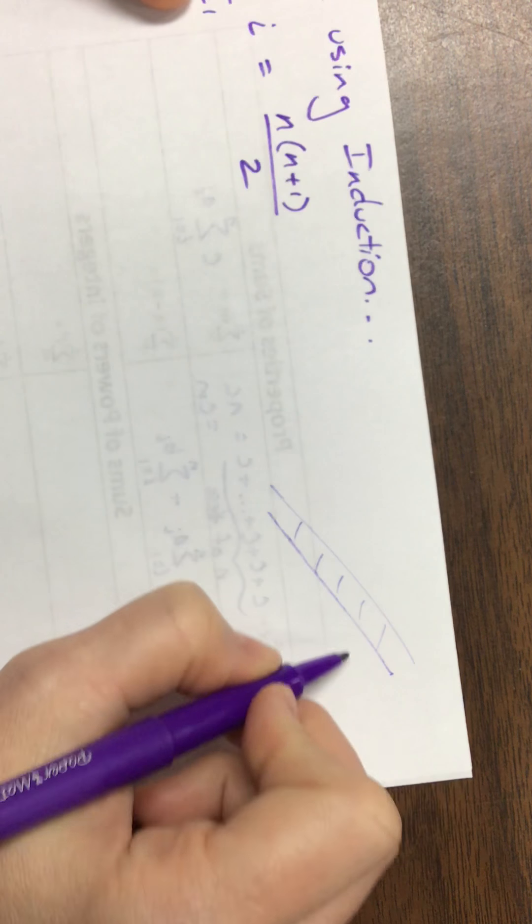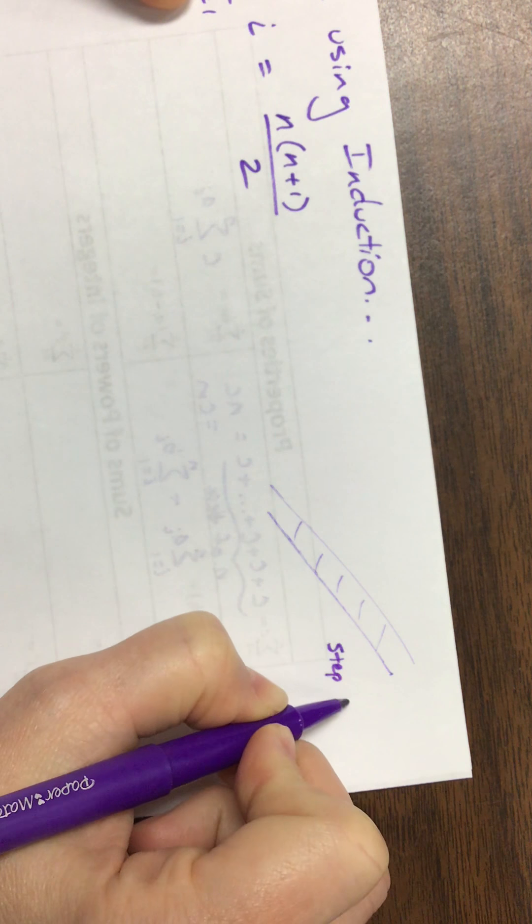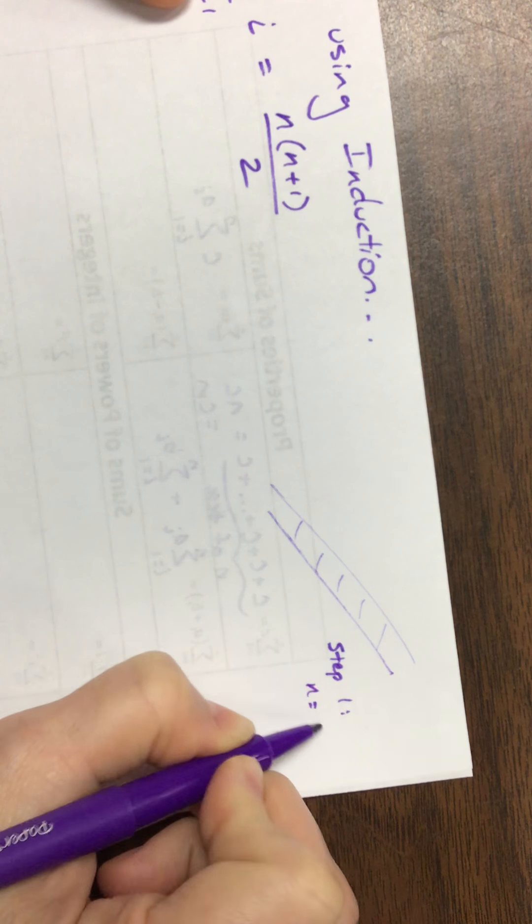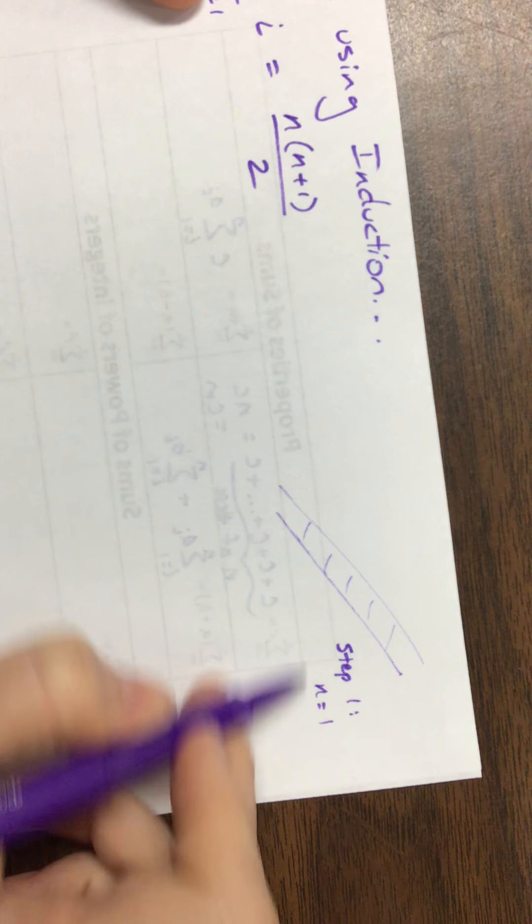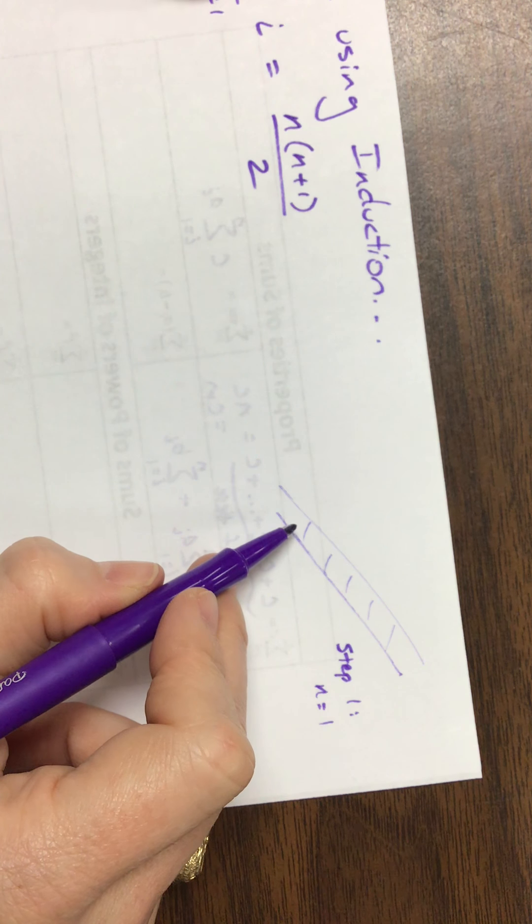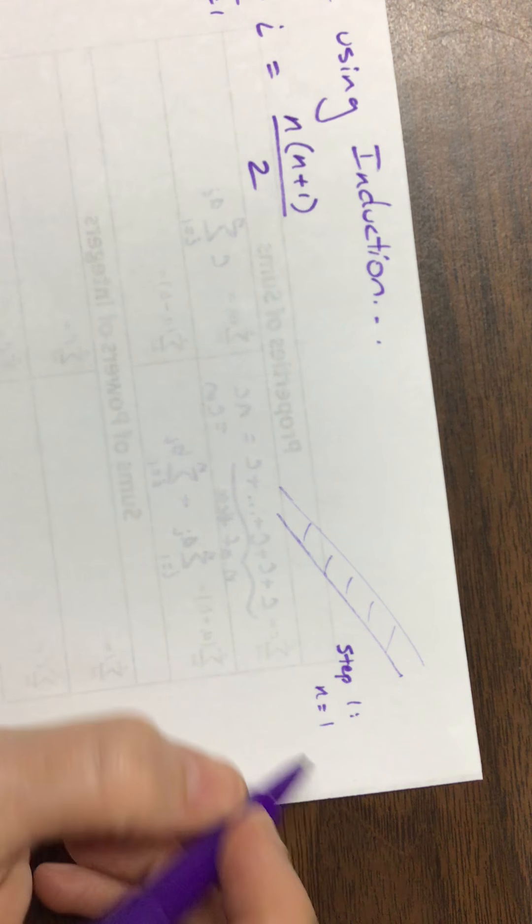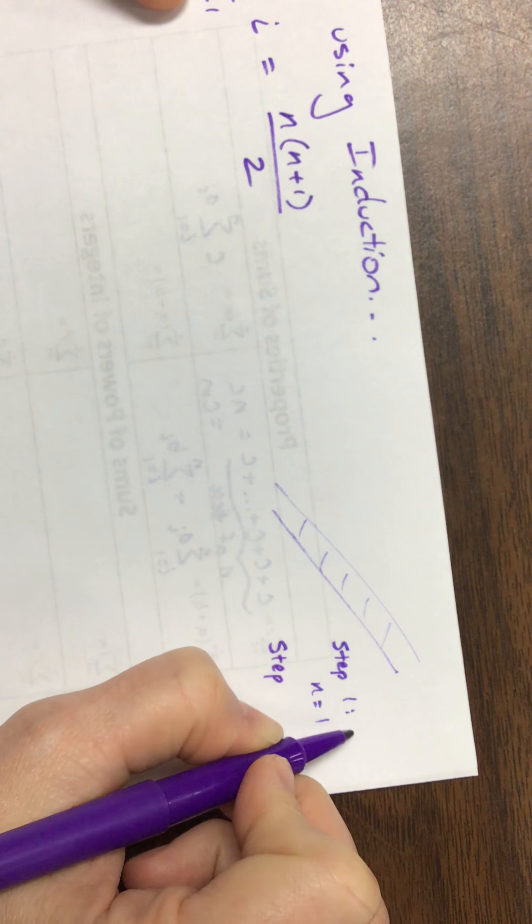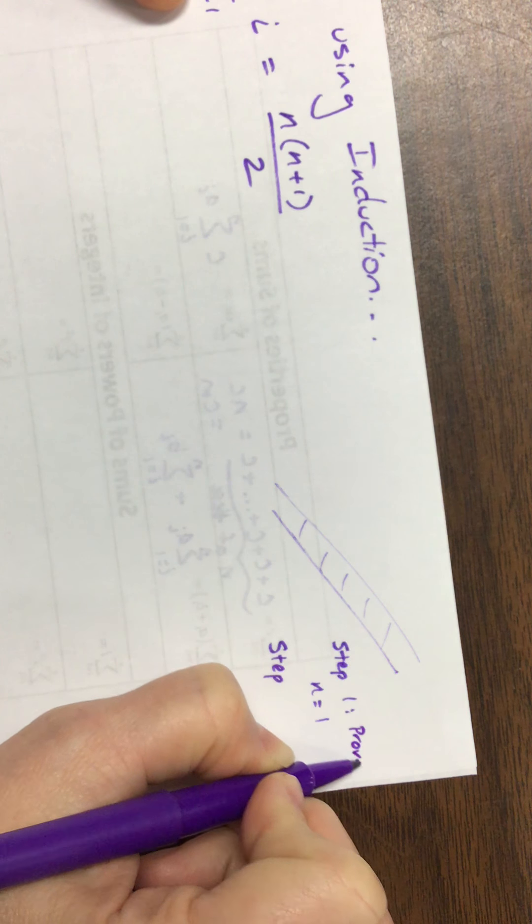And then, so step one, step one when we do this proof by induction is going to show that n equals 1. So basically when we think about our ladder, can I get to the first step? If I can't even get to the first step, then it doesn't matter. The next step is, so this is step one is to prove that n equals 1.